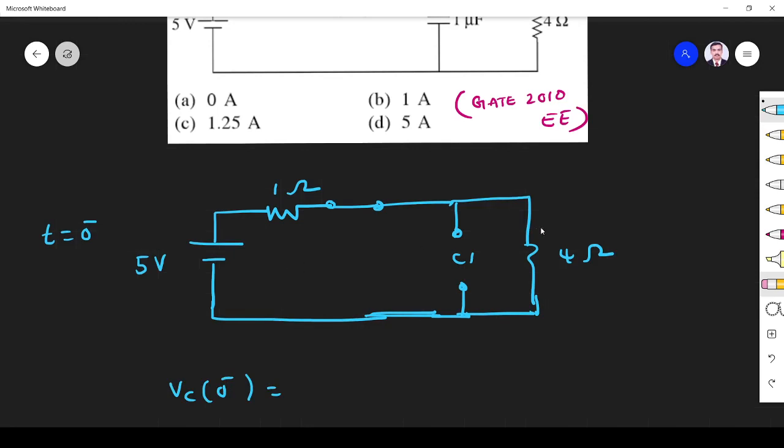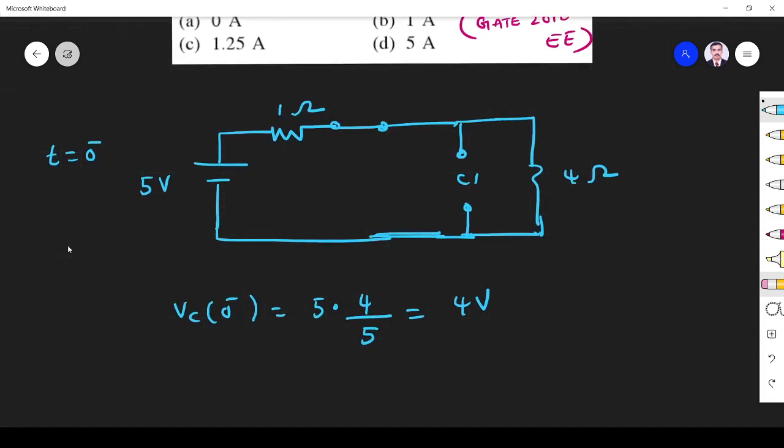Voltage across capacitor is voltage across 4 ohm resistor. So I apply voltage divider rule: total voltage into particular resistor divided by total resistance, 4 plus 1. So it is 4 volt.